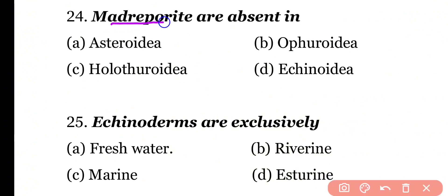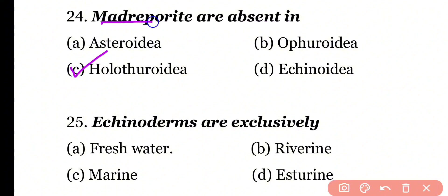Question 24: Madreporites are absent in Asteroidea, Ophiuroidea, Holothuroidea, or Echinoidea? Correct answer is Option C. Madreporites are absent in class Holothuroidea.